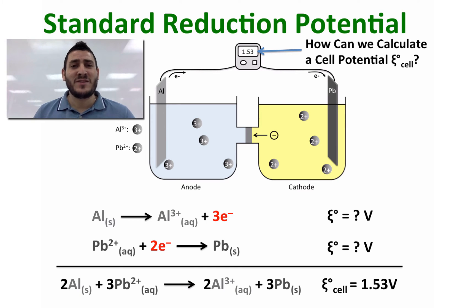If we can determine the standard reduction potential of each half equation, it will be easy later to calculate the cell potential from the potential energy of the redox reaction.